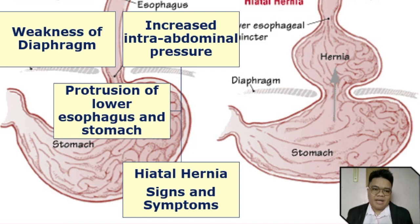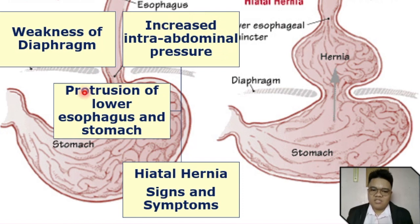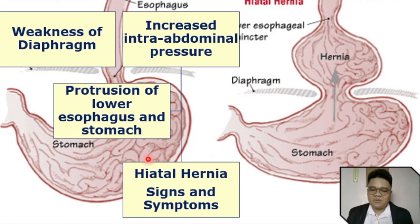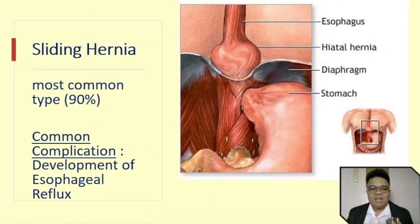To recap: weakness in the diaphragm, along with increased intra-abdominal pressure, can cause protrusion of the lower esophagus and stomach above the diaphragm, resulting in hiatal hernia and its signs and symptoms.